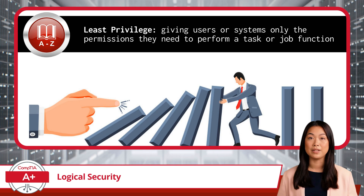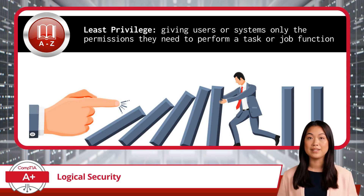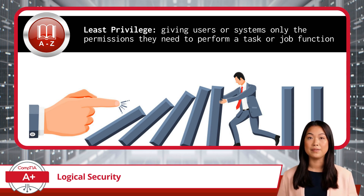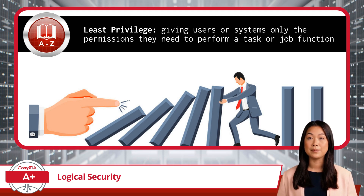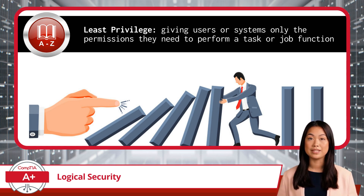Before getting too carried away with logical security, it's important to understand least privilege. The principle of least privilege is a foundational concept in logical security that involves giving users or systems only the permissions they need to perform a task or job function, and nothing more. For example, if an employee needs to read but not edit certain files, they would only be granted read permissions. This principle is vital because it reduces the overall security risk within an organization, limiting the potential damage that can be caused by both accidental errors and malicious actions.